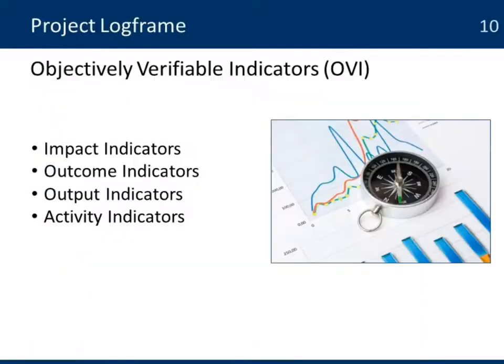In the next column, we have what are called the Objectively Verified Indicators. These are the indicators for each one of those levels — they are impact indicators, outcome, output, and activity indicators.